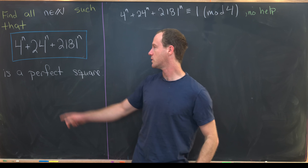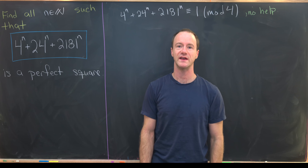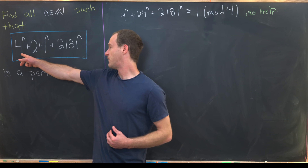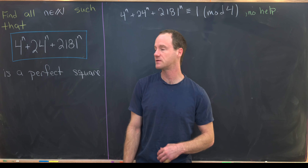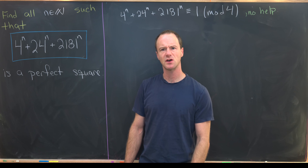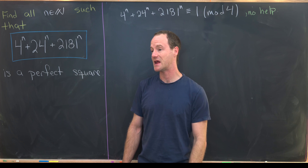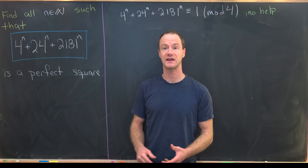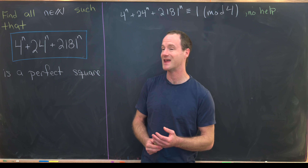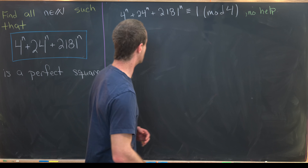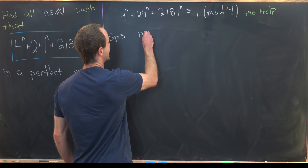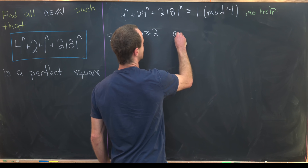Looking back, we notice that 24 is always a multiple of 8, and 4^n is a multiple of 8 when n ≥ 2. So we could reduce mod 8 for all cases when n ≥ 2, and then check the n=1 case separately. Let's suppose n ≥ 2 and that we have a solution.